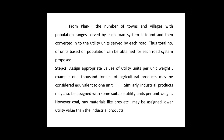For example, 1000 tons of agricultural products may be considered equivalent to 1 utility unit, and similarly the industrial units may also be assigned with some suitable utility units per unit weight. The agricultural products and the industrial products are to be provided with utility units. However, raw materials like coal, ores, etc. may be assigned certain lower utility unit values than the industrial products.